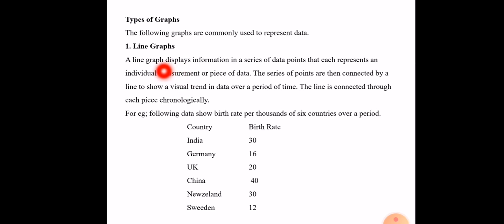Let's explain the line graph. A line graph displays information in a series of data points that each represent an individual measurement or piece of data. The line graph displays information in a series of points. The series of points are then connected by a line.